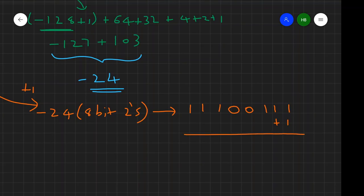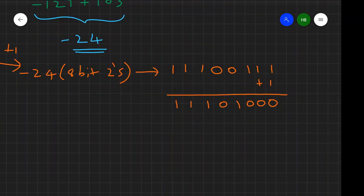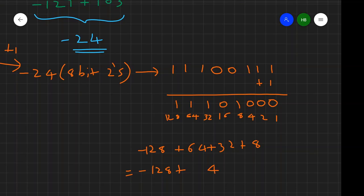Here it will be 11101000. Now let's check whether this is correct or not. Here it is 1, 2, 4, 8, 16, 32, 64, 128. And this 128 will become negative 128. And there is no plus 1 because this is 2's complement. And otherwise it will remain the same: 64 plus 32 plus 8. Here it will be negative 128 plus 104. And after we do the arithmetics, this will become negative 24.